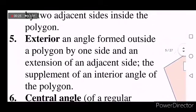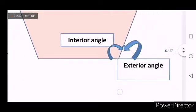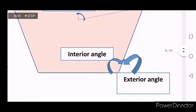The next one is called exterior angle. It is an angle formed outside the polygon by one side and an extension of an adjacent side, the supplement of an interior angle of the polygon. You can see here that with the given interior angle, there is an exterior angle which is a supplement of the given interior angle.